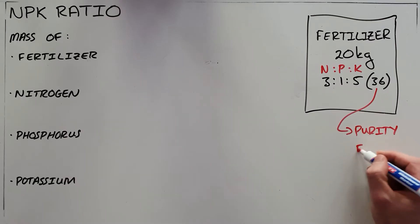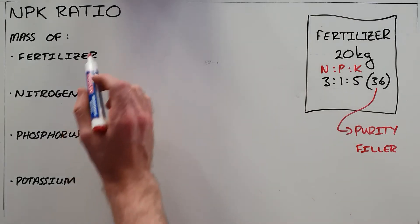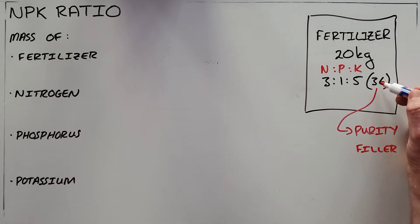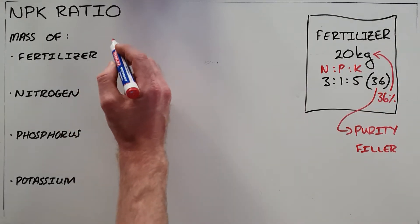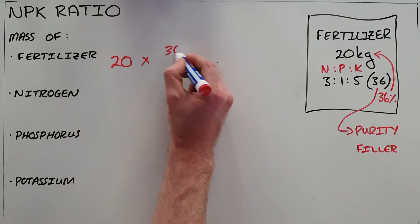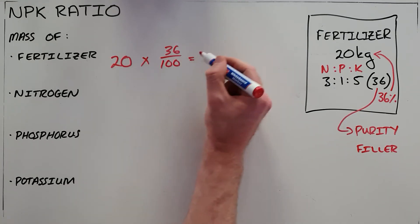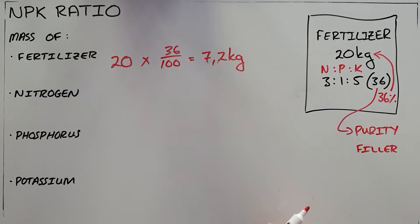There is something called filler that makes up the bulk of this bag. The questions would normally range from: calculate the mass of fertilizer in this bag. We know that the percentage purity tells us that only 36 percent of this mass is fertilizer, so we can calculate the actual mass of fertilizer by taking the mass of the bag, which is 20 kilograms, and multiplying it by 36 over 100 to find that 7.2 kilograms of this 20 is fertilizer, which means the other 12.8 kilograms is filler.